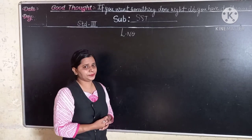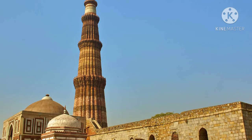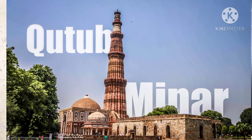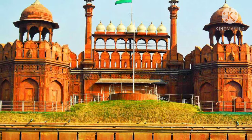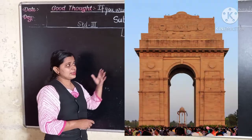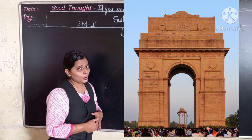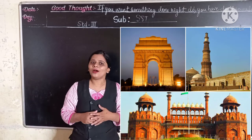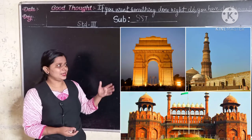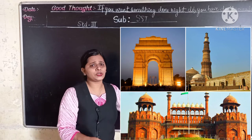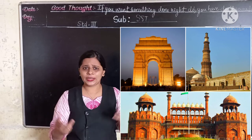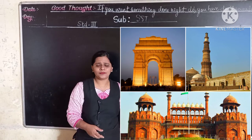Now look at this first picture. Can you recognize this picture? This picture is of Qutub Minar. Now look at the other picture — this is Red Fort. Next, this is India Gate. You might have seen all these pictures or you might have visited these places. Can you tell me where these are, in which part of India?